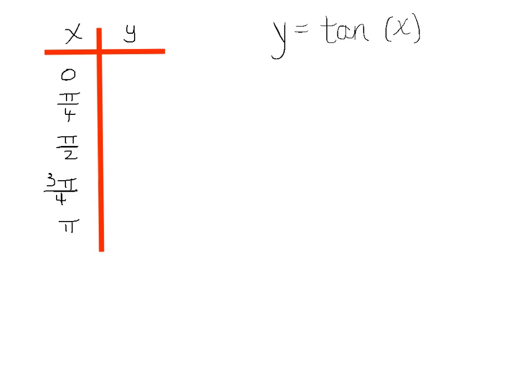Let's take a look at the table for the values of 0 to pi for the function tangent x. At 0 radians, tangent becomes sine over cosine. Since sine is 0 and cosine is 1, the tangent at x equals 0 radians is 0.